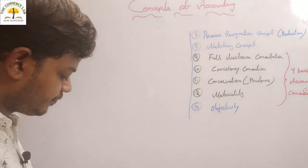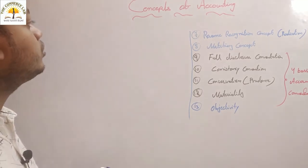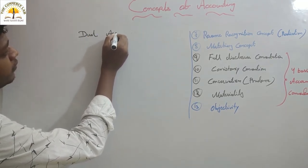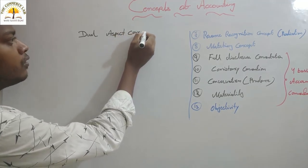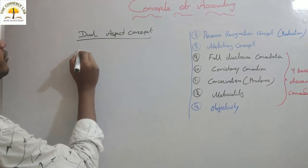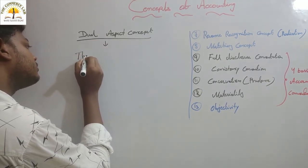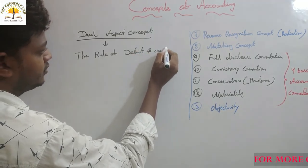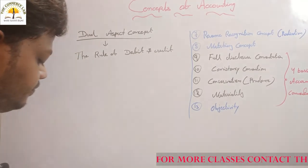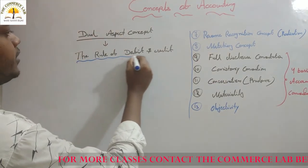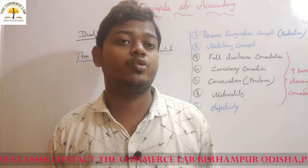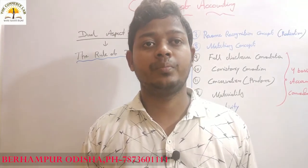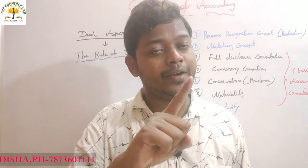Now what is the next — Dual Aspect Concept. Here, the rule of debit and credit comes into focus, which we explained in the introduction class. As a base on this concept, why do we call it dual aspect? Because every transaction has two-fold aspects. One is debit, and another one is credit.